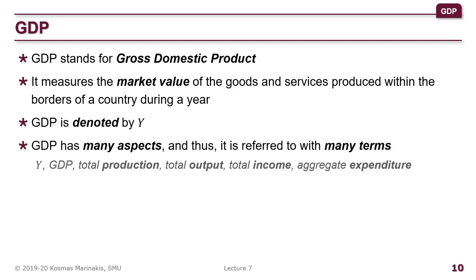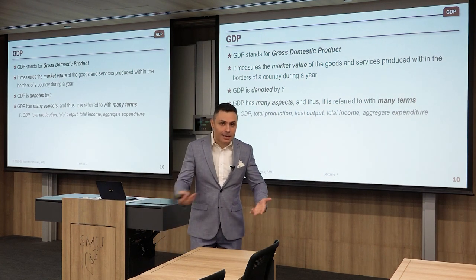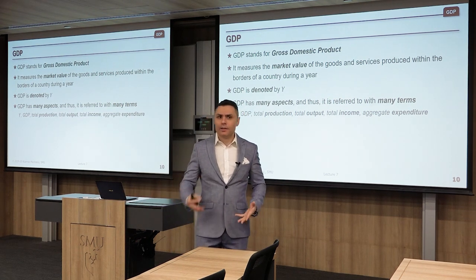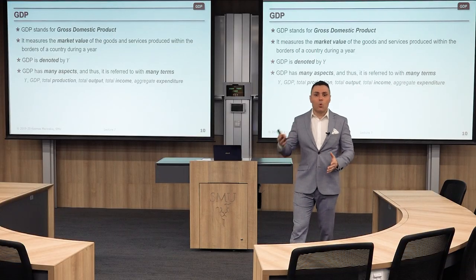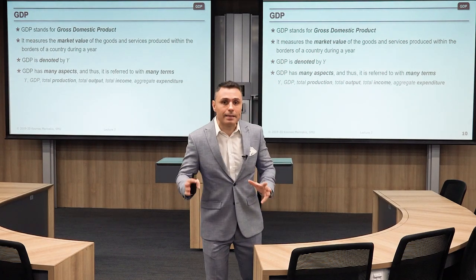GDP has many aspects — you can view it from very different angles. You will see it as capital Y, as GDP, as total production, aggregate output, total income, and aggregate expenditure. You might say expenditure and income are not the same thing — but GDP has many different aspects, which is exactly what we are going to explore now.